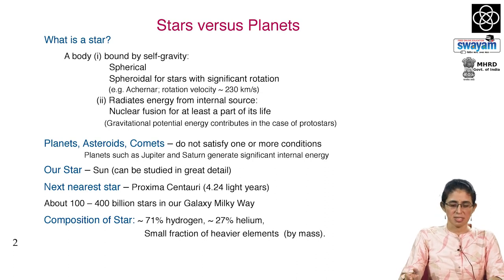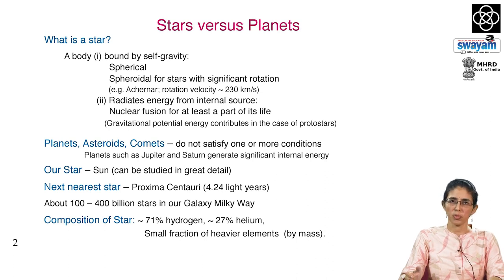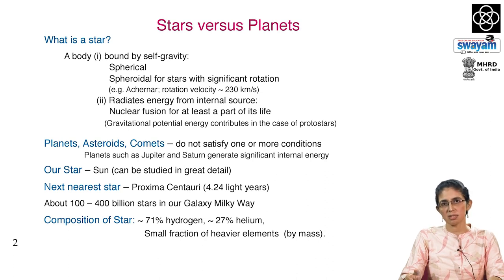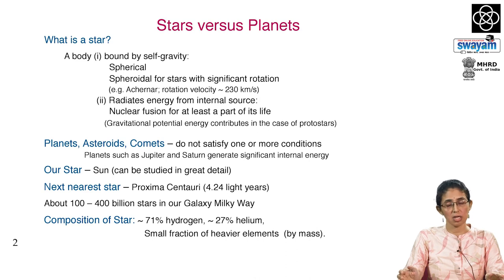The closest star to us is the sun, which provides a very good reference for us to study stars. The next nearest star is Proxima Centauri, which lies at 4.2 light years away from us. A light year is the distance that light travels in a year. If we consider the Milky Way, our galaxy, there are around 100 to 400 billion stars.